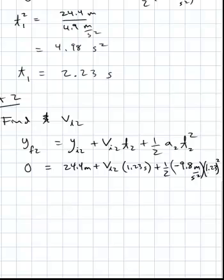And what do I end up with, I end up with 24.4 plus 1.23 V initial minus 7.41. And that gives me minus 13.8 meters per second is V initial of particle 2.